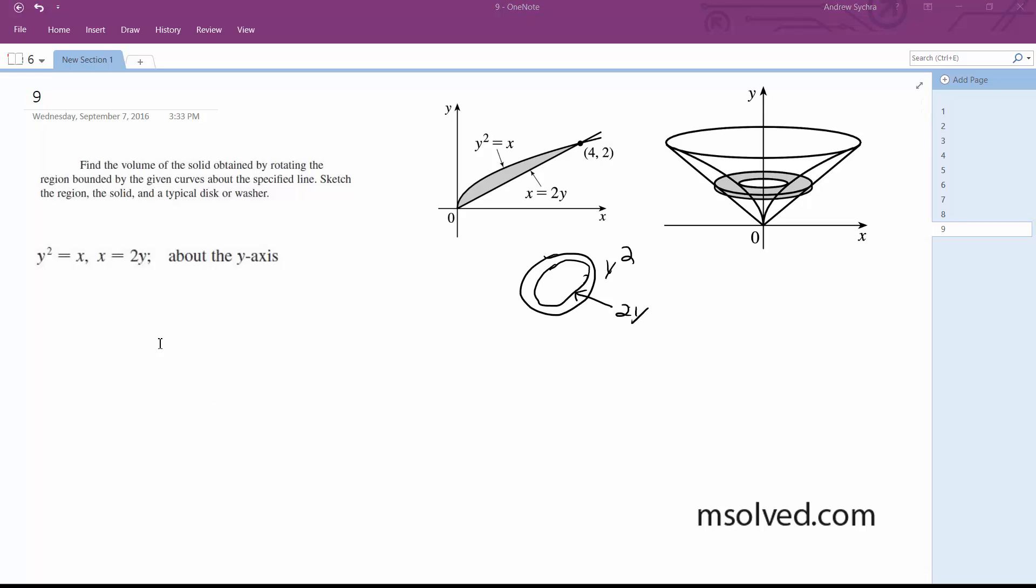So because we know this, the area with regards to y is equal to π(2y)² minus π(y²)². We get area of y is equal to 4πy² minus πy⁴. And then factoring this out further, A(y) is equal to π(4y² minus y⁴).